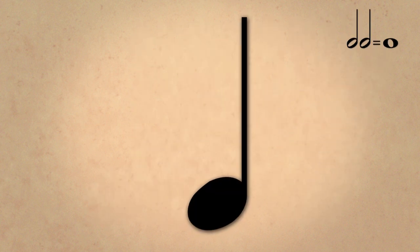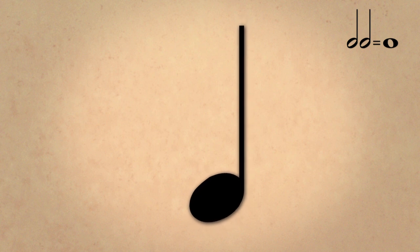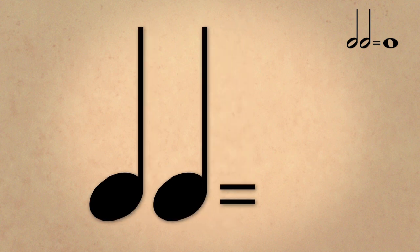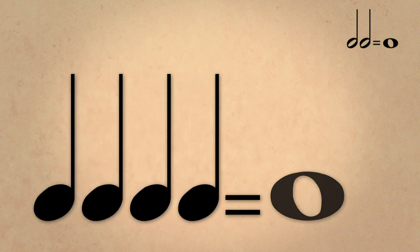A quarter note is like a half note, but it's filled in. Two of these equal a half note. Four of these equal a whole note.